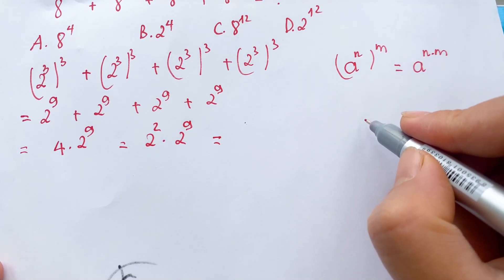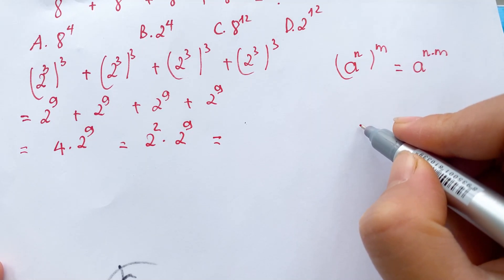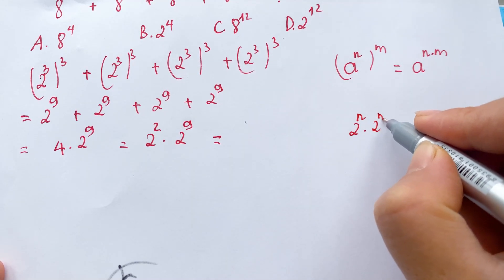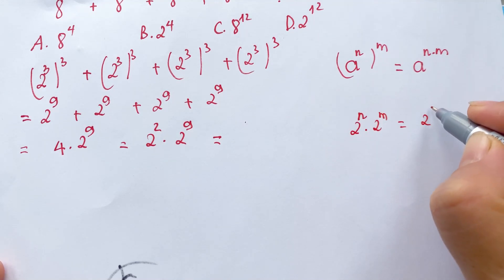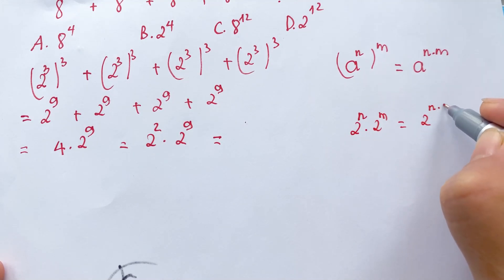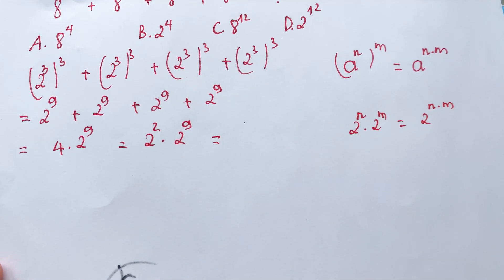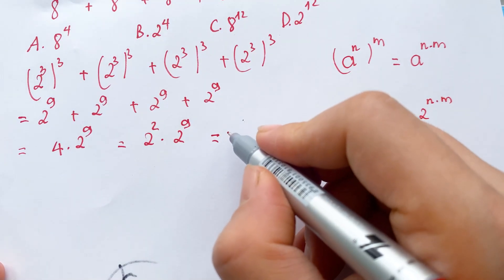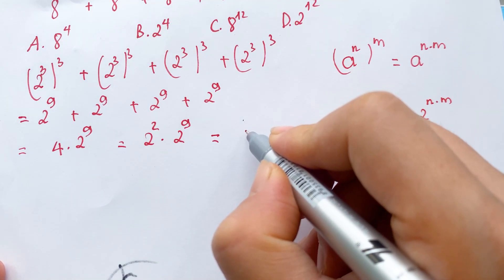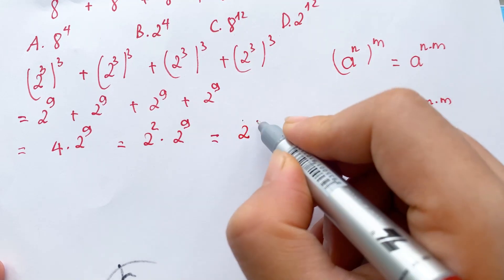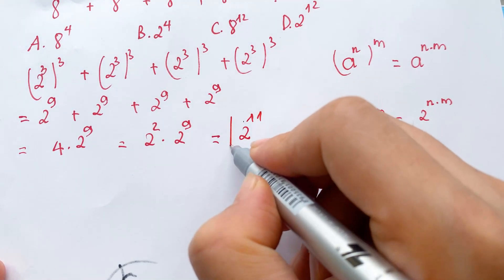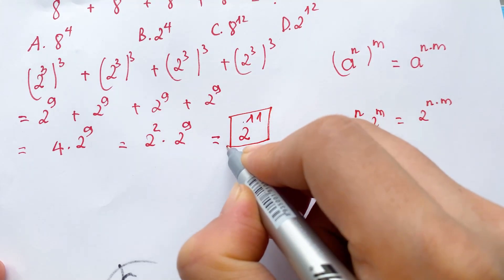Everyone can see that 2^n times 2^m equals 2^(n plus m). Therefore we also have 2^(2+9) = 2^11, which is the simplified expression.